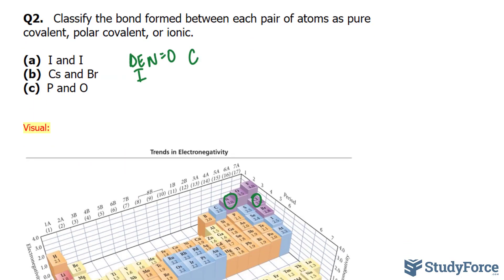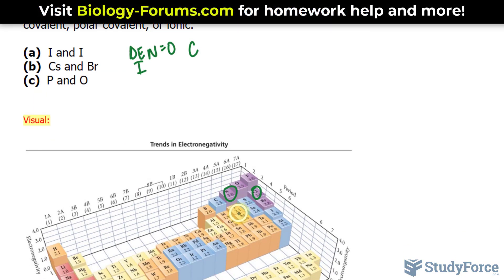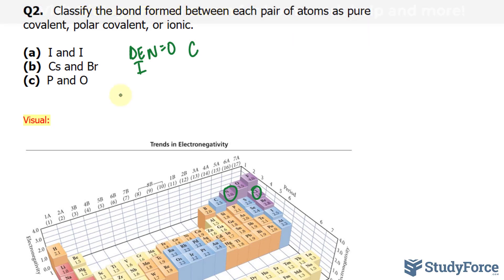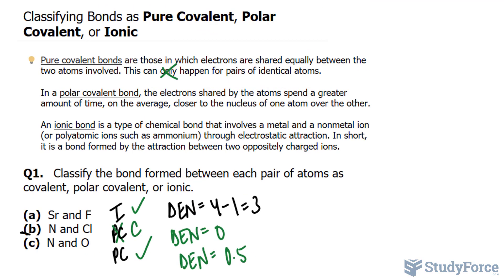Phosphorus and oxygen: phosphorus is 2.1 and oxygen is 3.5. Subtracting gives 1.4, and the chart tells us that this will be polar covalent. And there you have it — six examples on how to classify bonds as pure covalent, polar covalent, or ionic.